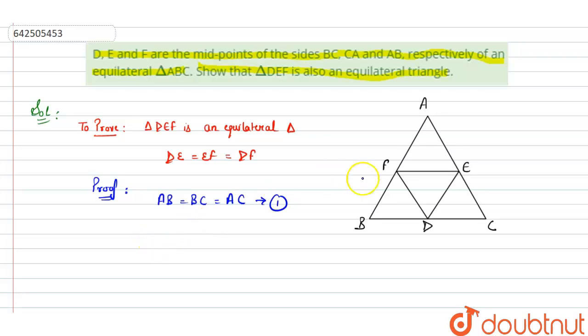So here, E and F are the midpoints of side AC and AB of the triangle. That means by midpoint theorem,